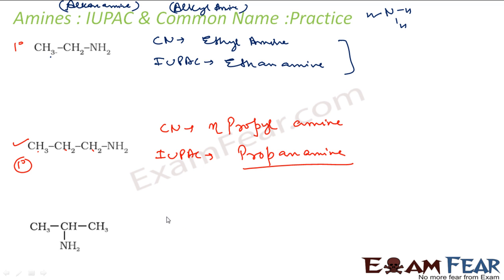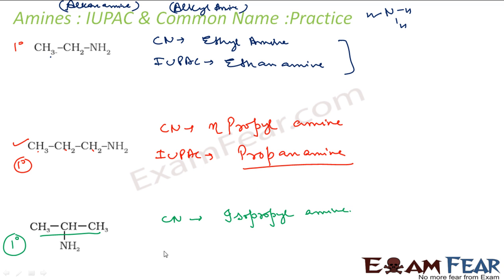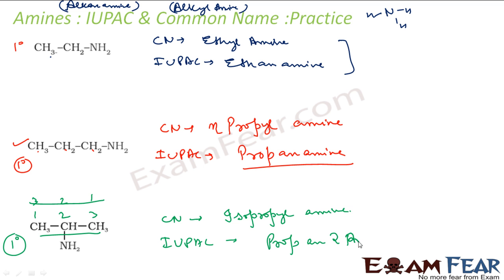This next compound is also first-degree — two hydrogens are intact, only one replaced. The whole group is propyl, but the carbon is attached at the middle position, making it isopropyl — so the common name is isopropylamine. For the IUPAC name, I select the longest chain and number it so that NH2 gets the lowest number. Numbering from either end gives position 2, so the IUPAC name is propan-2-amine.